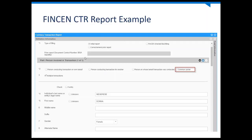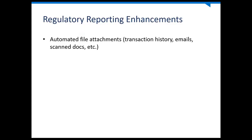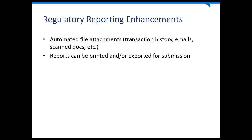This screenshot shows the CTR report in Caseware Monitor, and you can see we highlighted one of the changes made with the field. For other regulator reporting capabilities, we looked at automating file attachments. For suspicious activity reports as it relates to FinCEN, you have the ability to attach a file with a bunch of transactions to provide additional information to the reports being submitted. Reports can also be printed and exported to the requisite file for submission.